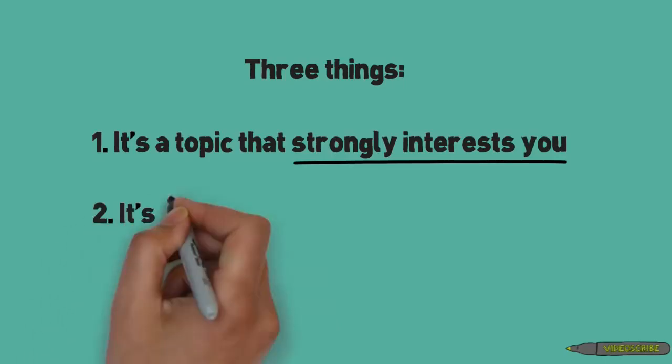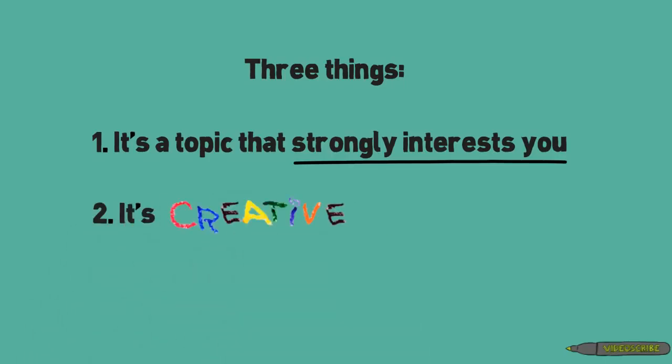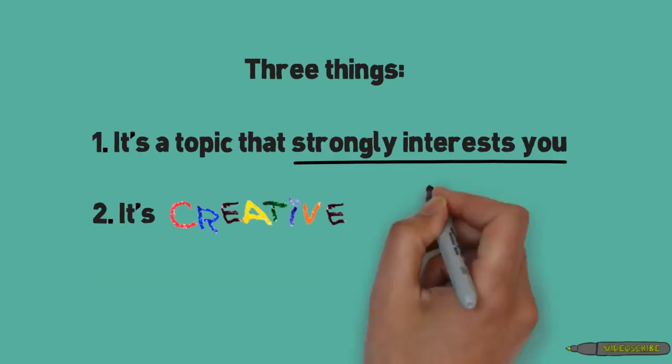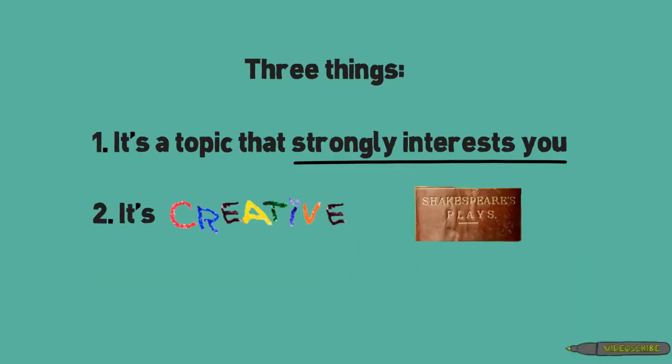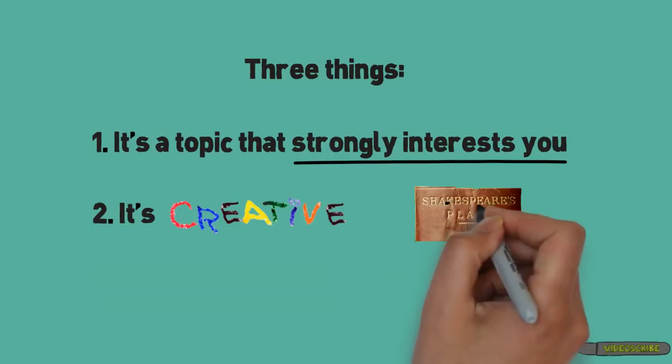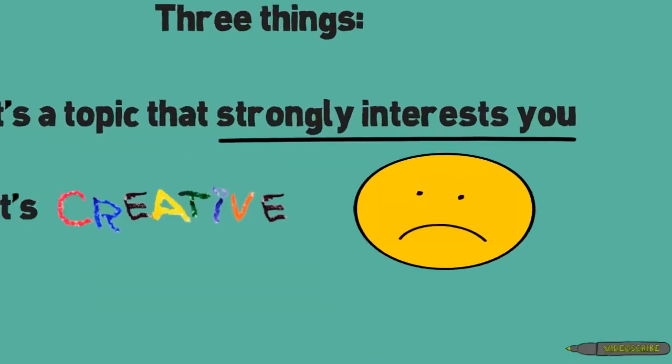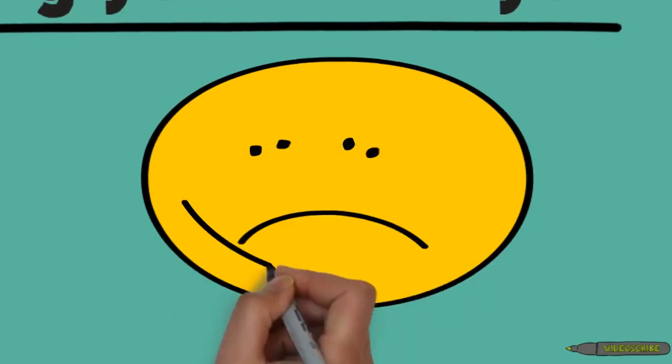Second, make sure your topic is creative. There are some topics that have just been written about over and over again. Can you come up with a topic that perhaps hasn't been covered that much? Try to pick something that is creative and exciting to you and your peers. Writing about Shakespeare's dramas is great, but that topic in itself has been covered extensively, so try to find something a little more creative than that.